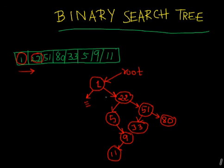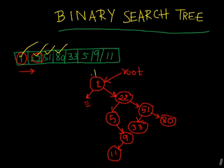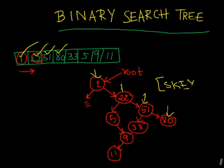However, there are a few problems with binary search trees. In this example you can see one such problem: the first four values all ended up on the same side of the tree. This actually increases the length of the tree linearly — it's called a skew problem. The tree becomes heavily skewed to the left or right side, and that increases the insertion and deletion complexity.